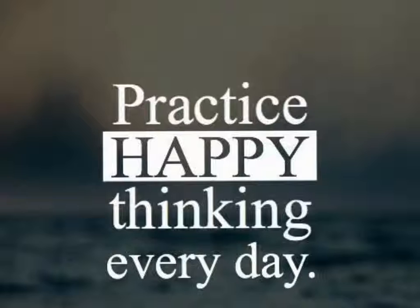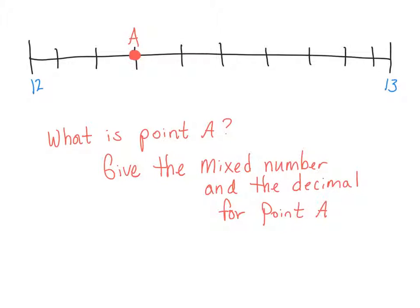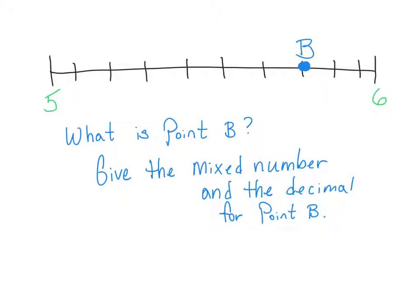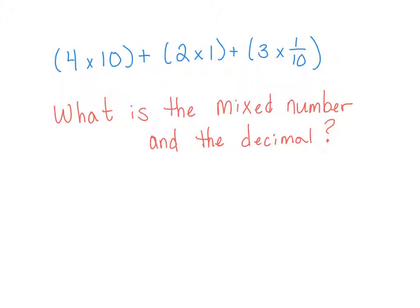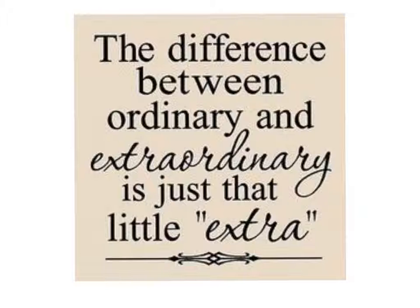Practice happy thinking every day. Keep telling yourself that you can do it and give it your best shot. For homework — number one: using this number line, what is point A? Give the mixed number and the decimal for point A. Number two: for point B, what is it? Give the mixed number and the decimal for point B. Number three: four times ten plus two times one plus three times one-tenth — give the mixed number and the decimal for this expanded form. Bring all your work in tomorrow so I can see how well you've been doing. The difference between ordinary and extraordinary is just that — a little extra. Have a wonderful night.